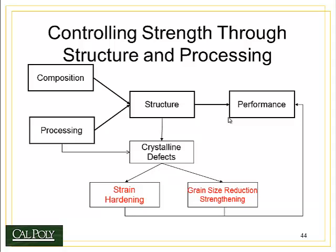In this part, we're going to look at the first two types of defects: dislocations and grain boundaries. These lead to two different mechanisms — strain hardening and grain size reduction strengthening — that occur in all metals, even pure metals. Together, these mechanisms can cause an increase in strength, but as with all things, when we increase strength, we tend to decrease ductility and the material becomes more brittle.